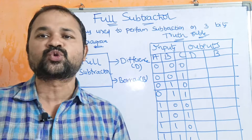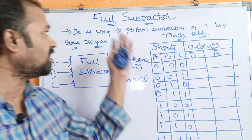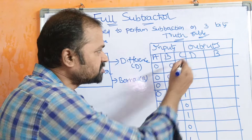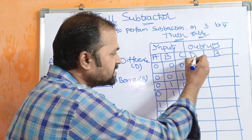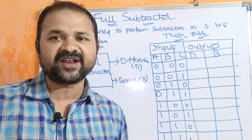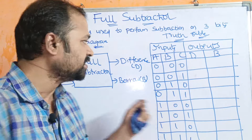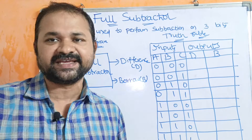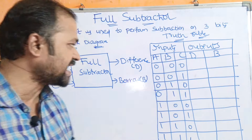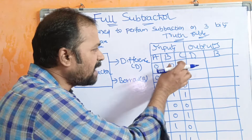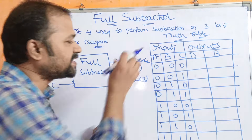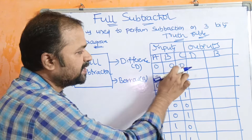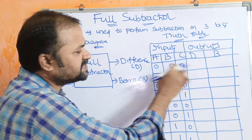Let us see the truth table for the full subtractor. Here A, B, C are the inputs, and the outputs are D and B — difference and borrow. If there are 3 inputs, then totally we will get 2 to the power 3, which is 8 combinations. We have to perform subtraction operation: first subtract B from A, then subtract C from that result.